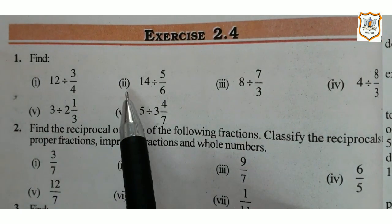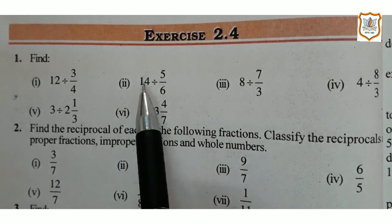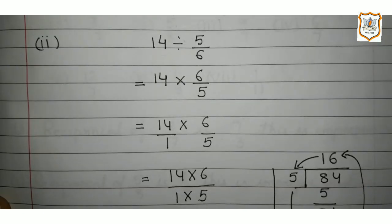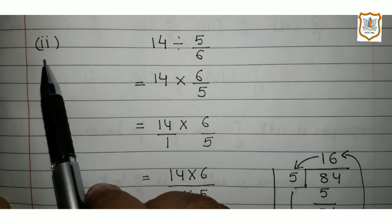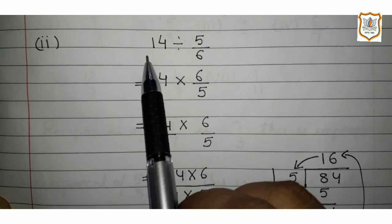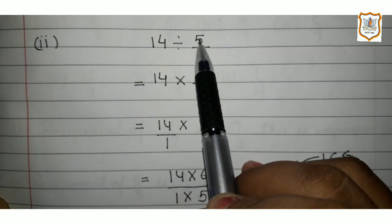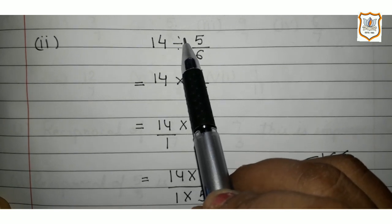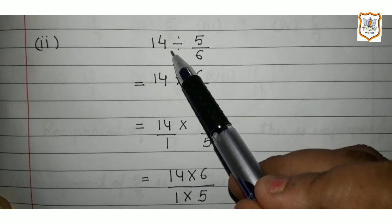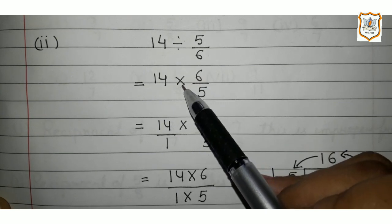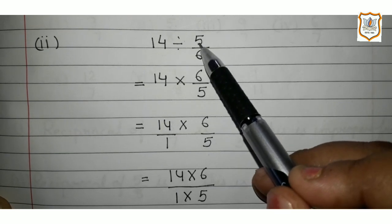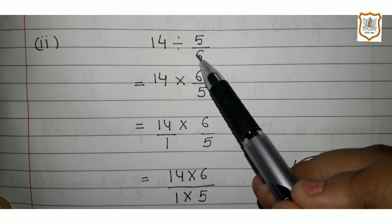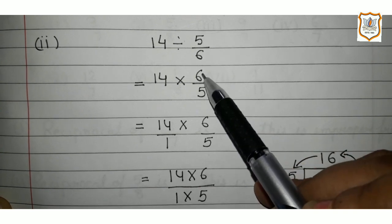The second part of exercise 2.4 question number 1 is 14 divided by 5 upon 6. Let's solve part 2 of question number 1 — that is 14 divided by 5 upon 6. As I told you earlier, to solve division of two numbers this division sign will be converted into multiplication sign and the fraction after that, which is 5 upon 6, the reciprocal of 5 upon 6 will be taken. The reciprocal of 5 upon 6 is 6 upon 5.